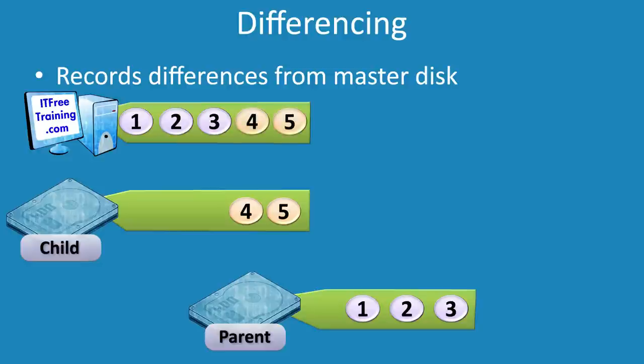The combined parent drive and changes on the child drive are what are seen by the virtual machine — so the virtual machine sees one virtual hard disk. However, the virtual hard disk is the parent and child disks combined into one. The parent contains the initial data and the child contains any changes that have been made.